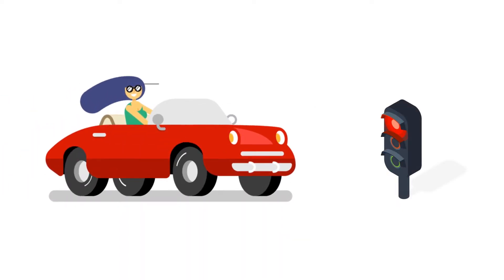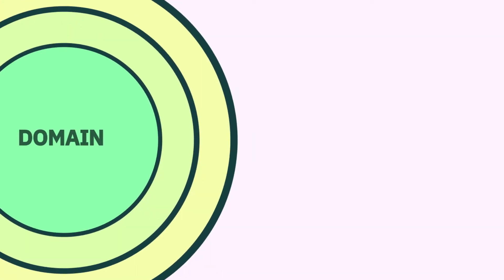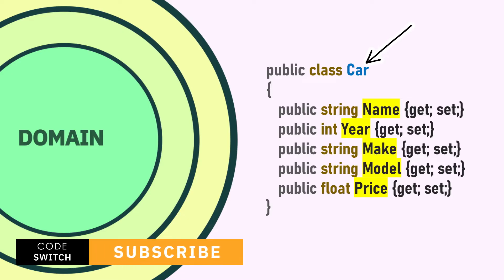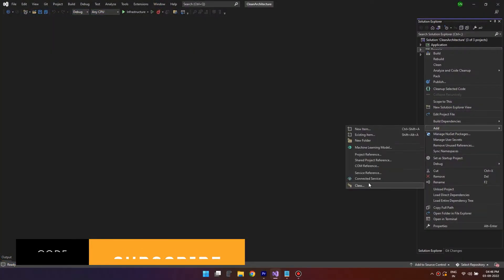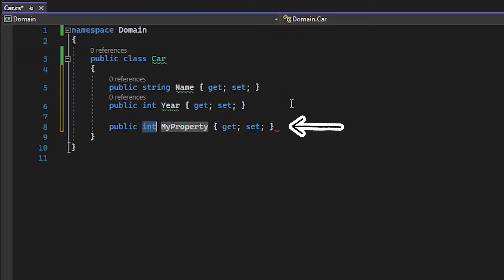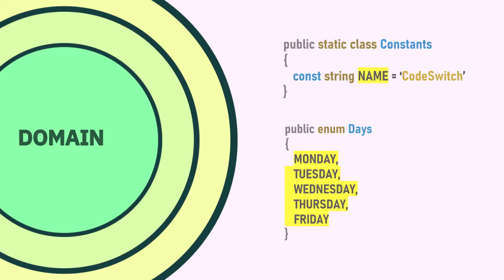Let's take our domain layer. This is the layer where you need to store your core business models — in our case, the car class. Very important: don't mess up this layer with any custom logics. Just your business objects, and that is enough. However, if you have any other entities like constants or enums that are used by your model classes, then you can place them in this same layer.